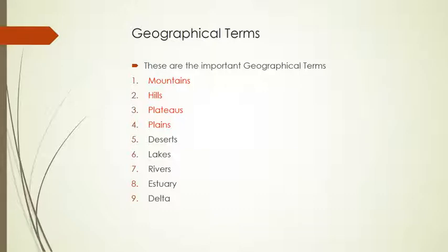rivers, estuary, and delta respectively. This is a lengthy topic, so we will divide it into two parts. In the first part we will discuss the first four geographical terms, and in the second part we will discuss the rest of the geographical terms.